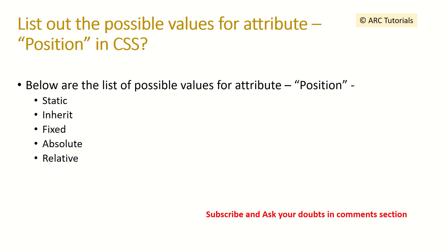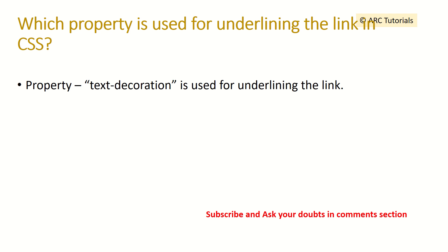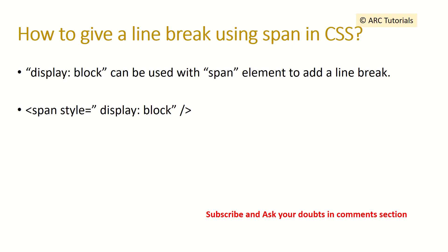Which property is used for underlining a link in CSS? To make text underlined or remove the underline, we use the property text-decoration. How do you give a line break using span in CSS? We use display: block — for example, writing span style='display: block', which gives a line break to the element.